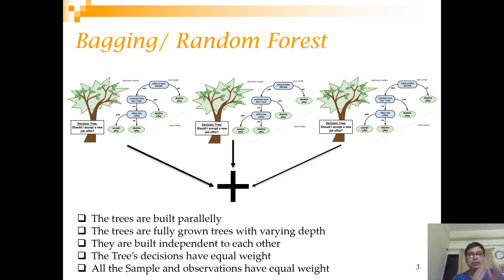Looking at the characteristics: the trees are built parallelly or can be built parallelly, the trees are fully grown with varying depth, they are built independent of each other, the tree's decisions have equal weight, and the training observations also have equal weight. These are important assumptions regarding Random Forest or bagging.